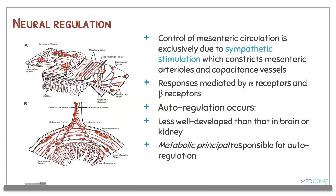When looking at the neuroregulation of the mesenteric circulation, its control is exclusively due to sympathetic stimulation that constricts mesenteric arterioles and capacitance vessels. The responses are usually mediated by alpha receptors and beta receptors. Autoregulation occurs but is less well-developed than that in the brain or the kidney. The metabolic principle is the one responsible for this autoregulation.